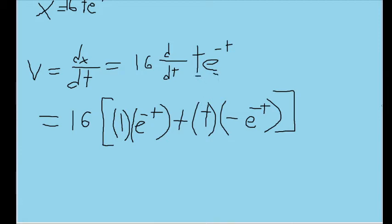And then plus the reverse of that, the first term unchanged times the derivative of the second term. So that's plus t, the first term here, times the derivative of e to the power of negative t, which using the chain rule is just negative e to the power of negative t.